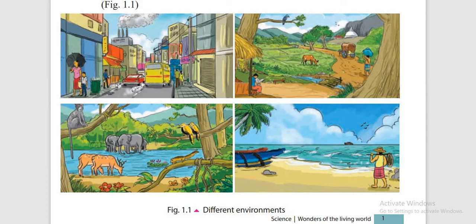If you compare these two environments, you can see the different types of diversity between them. In the first picture, there is no chance to see plants. But in the second picture, that is full of nature. And the third environment is completely nature.